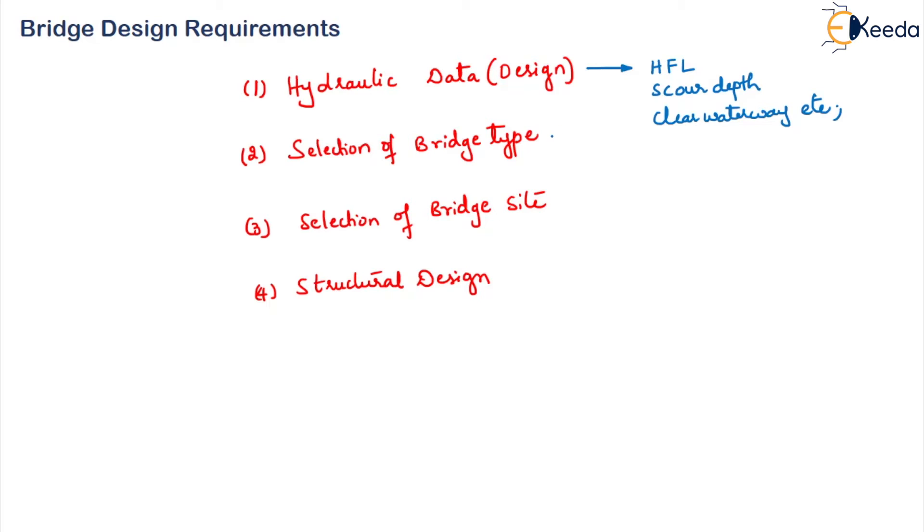Next, moving on to the selection of type of bridge, this is very important criteria to select which type of bridge we need to construct. Once the hydraulic data is obtained, we have to decide on all these things when it comes to the bridge type. We need to see what is the span length required, how much has to be the span of the bridge. Then we have to see the bridge length, then the beam spacing.